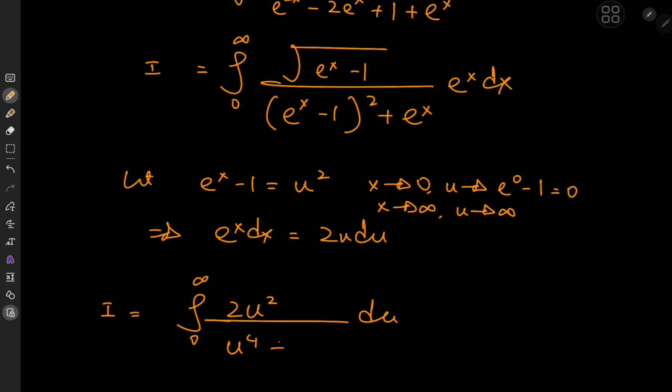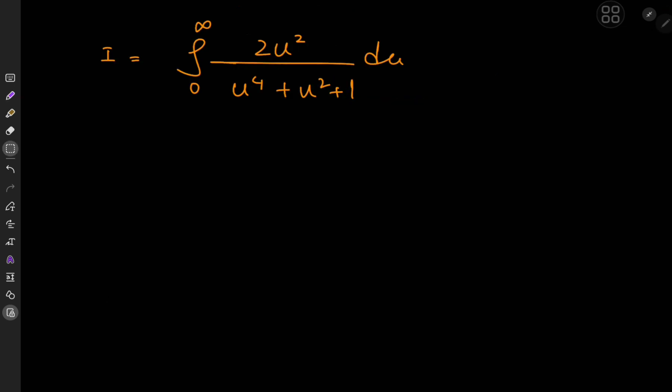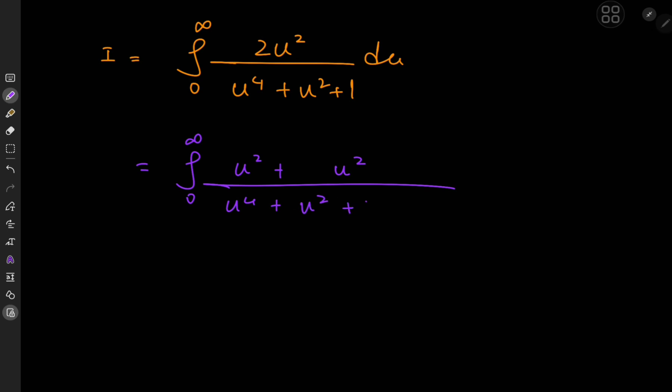This kind of integral is perfectly solvable using contour integration, but it's also solvable using real analytic techniques — a fairly common sort of integral seen many times on this channel. The approach uses symmetry and starts with expanding the numerator. We write 2u squared as u squared plus u squared, giving the integral from 0 to infinity of u squared plus u squared divided by u to the fourth power plus u squared plus 1 du.